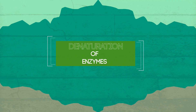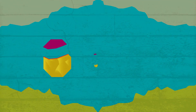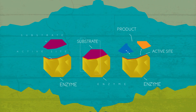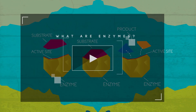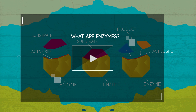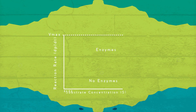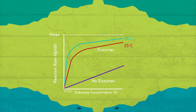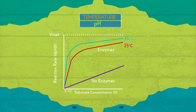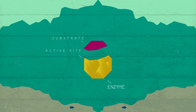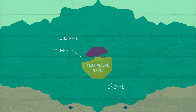Denaturation of enzymes. Before we start, you should already know what enzymes actually are — watch our video 'What are enzymes?' Each enzyme has conditions under which it functions best; in other words, the point at which the rate of reaction is at its highest. Amongst these conditions, the most well-known are temperature and pH.